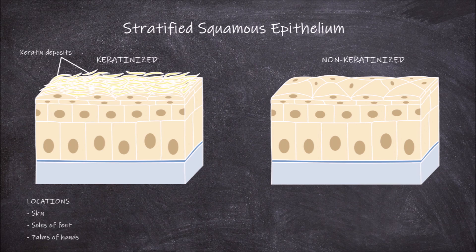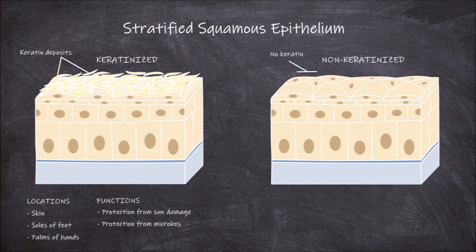Because keratin is tough, this type of epithelium primarily functions in protection, in protecting the tissues underneath the epithelium. In the skin found on the body, it helps protect from heat and damaging rays from the sun, and from microbes or other foreign substances getting into the body.